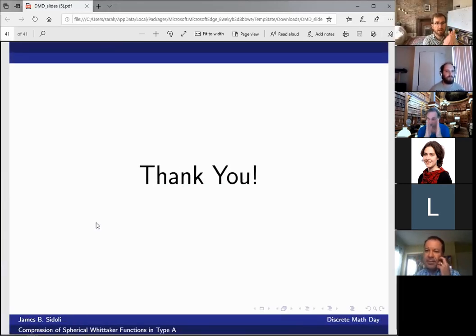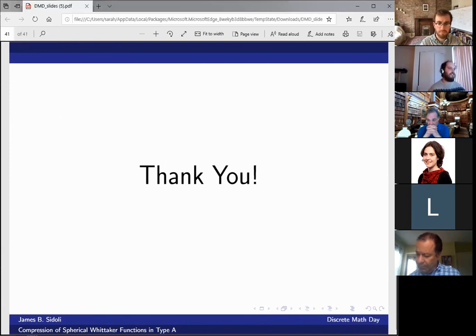Great. Let's give James a quick round of applause. Are there any questions? I know there's a lot kind of happening and the spherical Whitaker function has a lot of number theory in the background. But there is in type A, you see the Schur function times this normalization constant and you have this Kirillov-Szilecki formula. And so yeah there's a lot of nice common parts here and number theory.